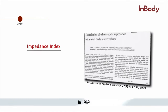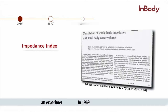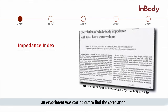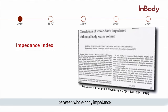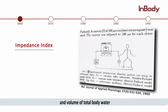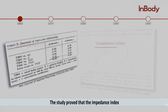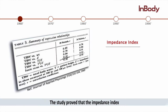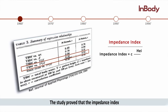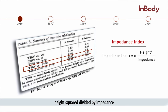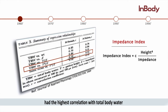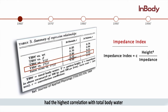In 1969, an experiment was carried out to find the correlation between whole body impedance and volume of total body water. The study proved that the impedance index — height squared divided by impedance — had the highest correlation with total body water.